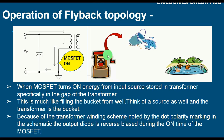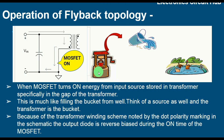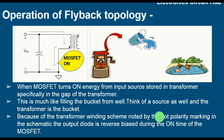So your input is the source — the well — and your transformer is the bucket. Because of the transformer winding scheme noted by the dot polarity, mentioned at the start of the video, the dot polarity in the schematic makes the output diode reverse biased during the on time of the MOSFET. So during the on time of the MOSFET, this output diode is reverse biased.